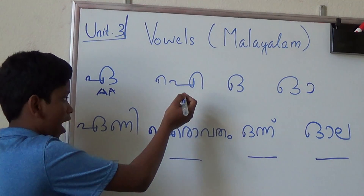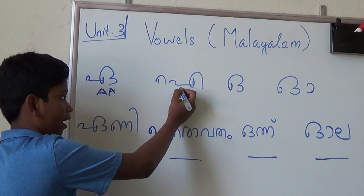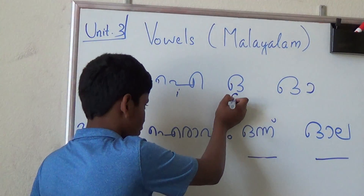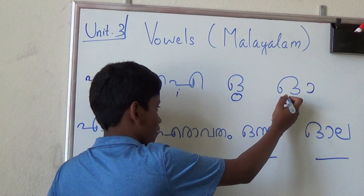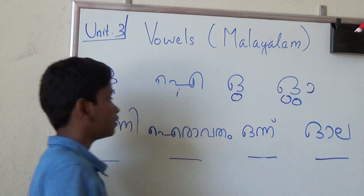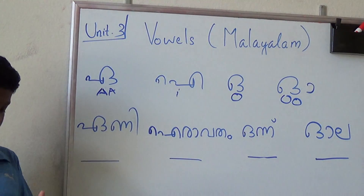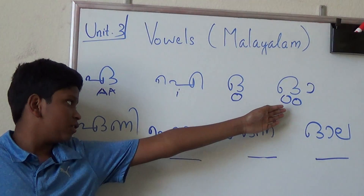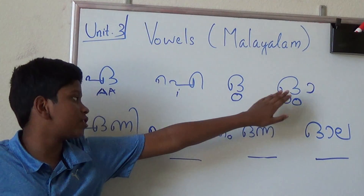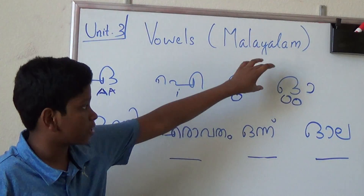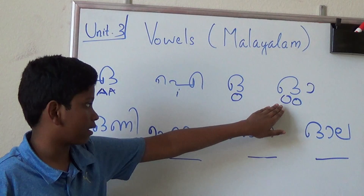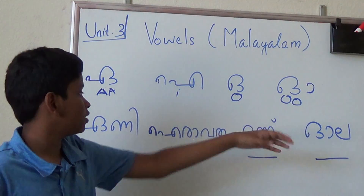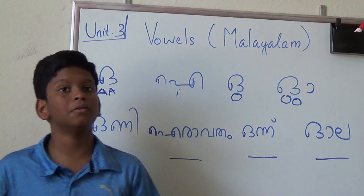Then we have I, the letter I. Then we have O, O. Then we have O. Let's do O. Sometimes it's pronounced differently — don't get confused. This is always the sign of O, not sometimes like when the top of O becomes O. Never pronounce O like O.